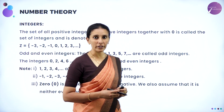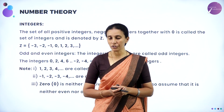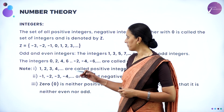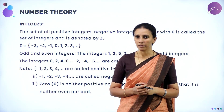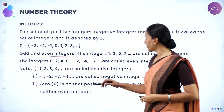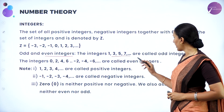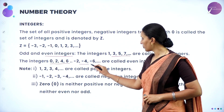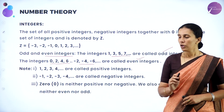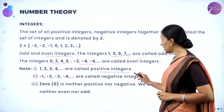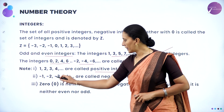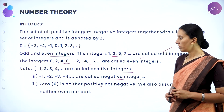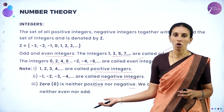Once you define the set of integers, we need to learn about odd and even integers. Any number divisible by 2 is called an even number; other than that, it is called an odd number. The integers 1, 3, 5, 7 are called odd integers. The integers 0, 2, 4, 6, −2, −4, −6 are called even integers. Numbers 1, 2, 3, 4 are positive integers; numbers with a negative sign are negative numbers, and 0 is neither positive nor negative. We assume 0 is neither even nor odd, but for some theoretical purposes we consider 0 as an even number.